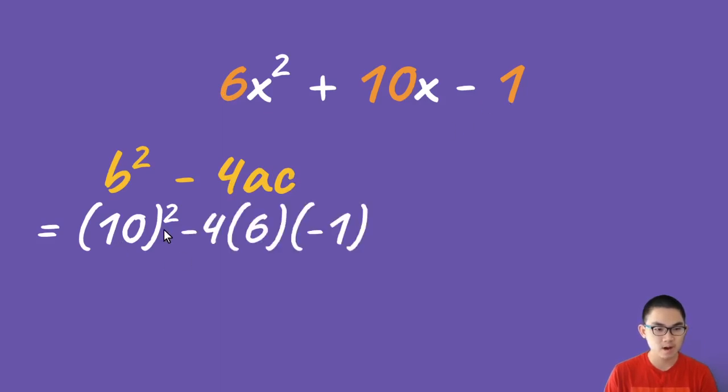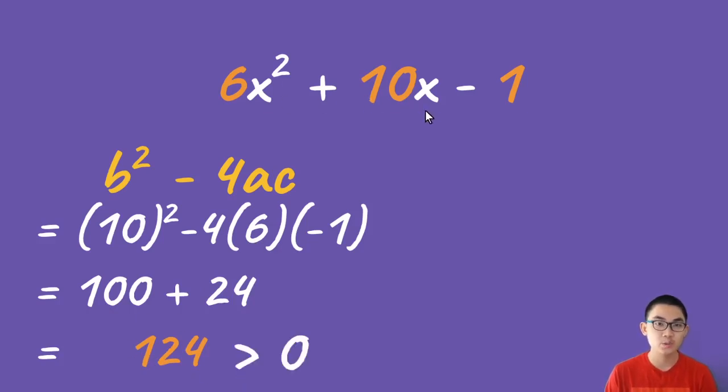And so 10 to the power of 2 is just 100, and negative 4 times 6 times negative 1 gives us positive 24. And so it's 100 plus 24, which is 124. And so because this number is greater than zero, we know that this function has two real solutions.